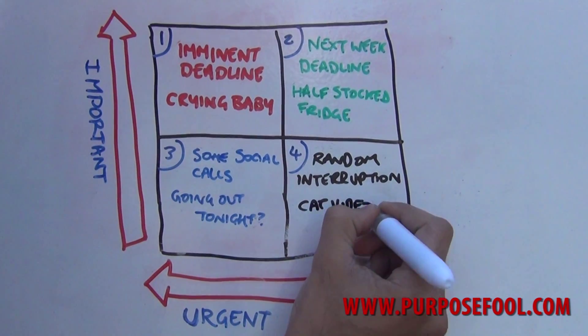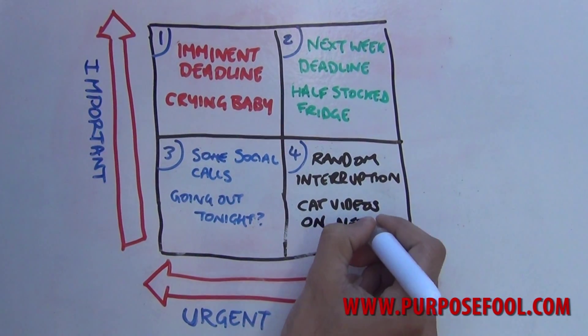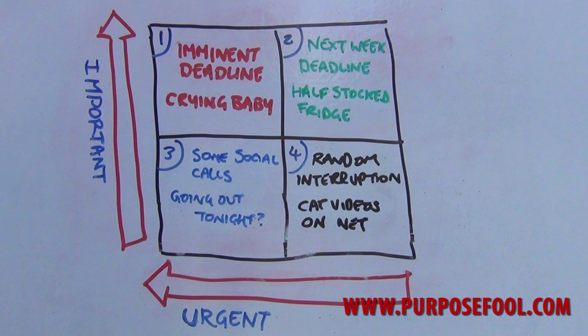And finally, the fourth quadrant are things that are neither important nor urgent, these distractions or the ultimate enemy of productivity and champion of time wasting on the internet, cat videos.